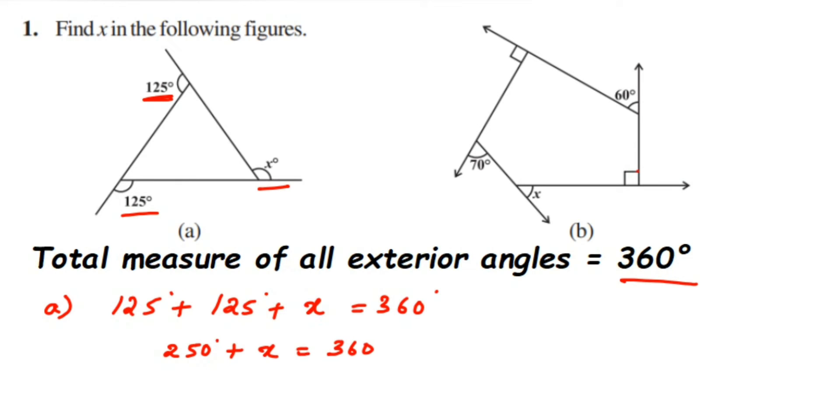Now we are going to transpose 250 to the other side of the equation, so signs will change. So x will be equal to 360 degrees minus 250 degrees. So then we will get 110. So x value is equal to 110 degrees.